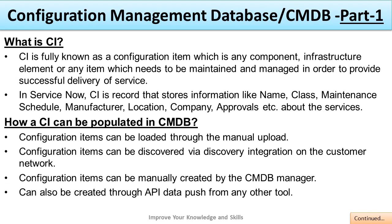What is a CI? CI is fully known as Configuration Item, which is any component, infrastructure element, or any item that needs to be maintained and managed in order to provide successful delivery of service. In ServiceNow, a CI is a record that stores information like name, class, maintenance schedule, manufacturer, location, company, and approval about the services.